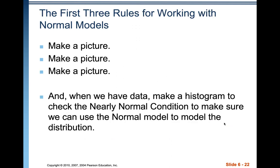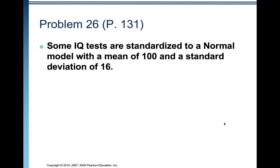The first three rules for working with normal models, just like many things in statistics, are to make a picture. When we have the data, make a histogram, dot plot, or stem-and-leaf plot to check the nearly normal condition to make sure we can use the normal model. We'll also talk about the normal probability plot.